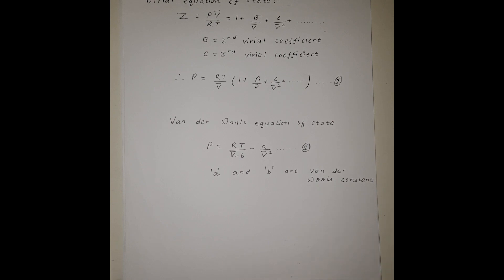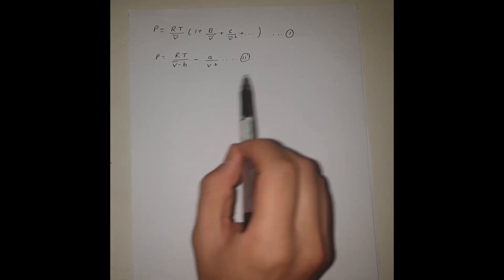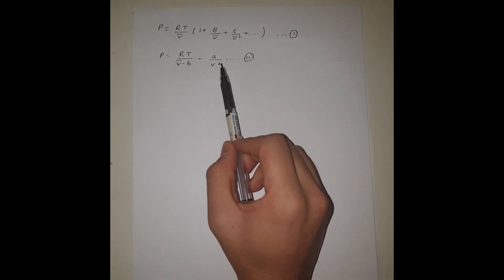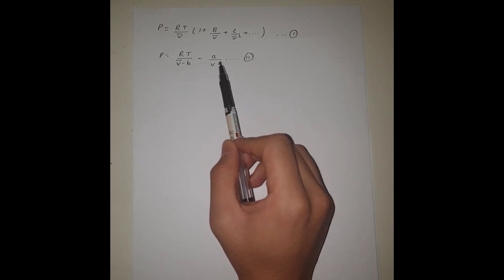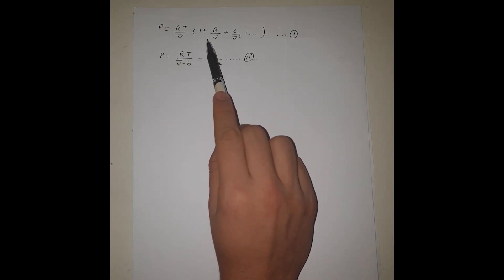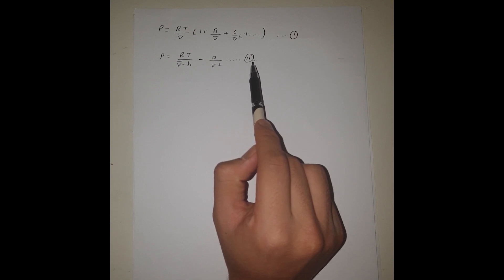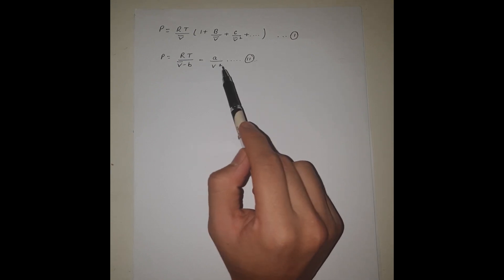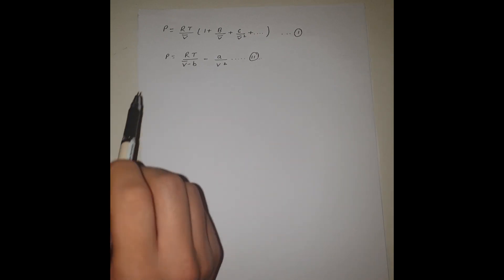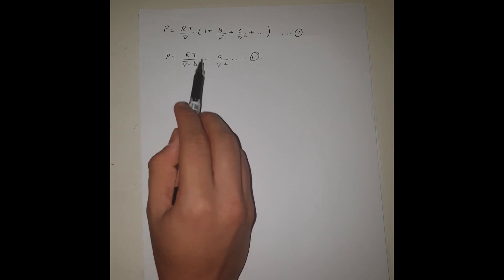Let's start with the solution. The two equations we have are: the first obtained from the virial equation of state, and the second from the Van der Waals equation of state. The first is expressed as a sum of a power series, and the second is not. So we need to find a way to convert the Van der Waals equation into a sum of a power series. To do that, we multiply and divide by the molar volume in the denominator part of this equation.